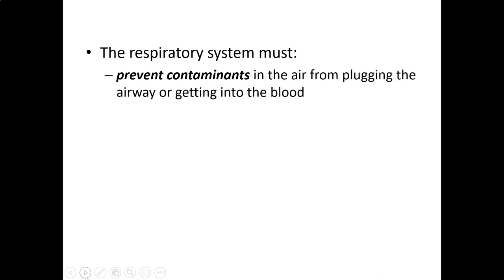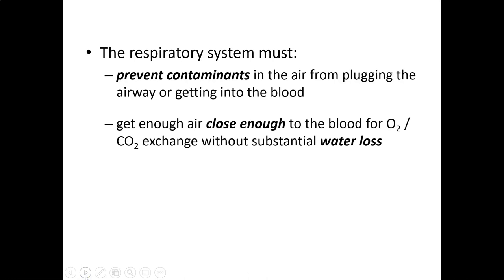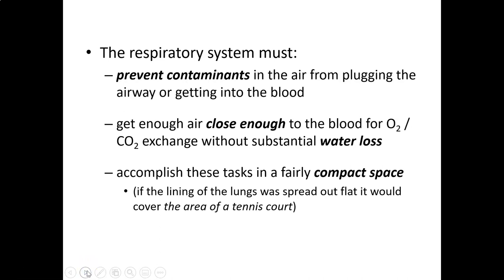There's a lot of stuff in the air that's not a respiratory gas — contaminants — and we need to keep those out of the lungs and blood. We also need to get air really close to water so diffusion can happen, without losing water from the blood. All of this must happen within the thoracic cavity. If spread out, your lungs would cover a tennis court — there's a lot of surface area.